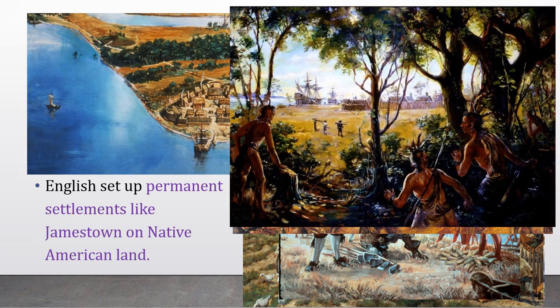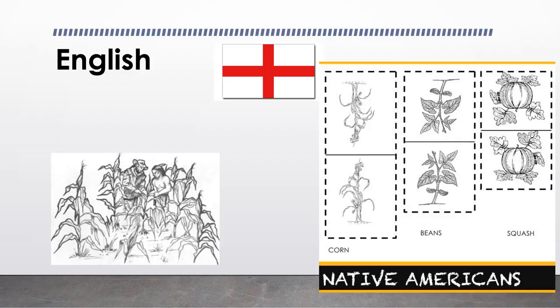The English were not leaving — in fact, more were coming every day from Europe, and they were taking the land of the Native Americans. Farms were being built on their hunting grounds, and Native Americans were being forced to push further and further inland to get out of the way of the English settlements.